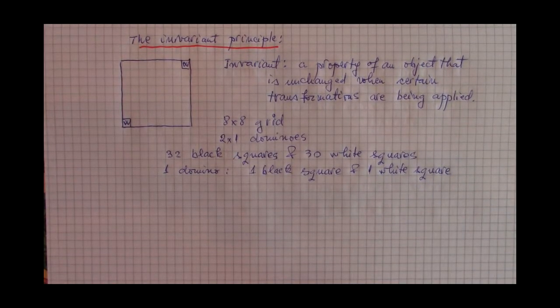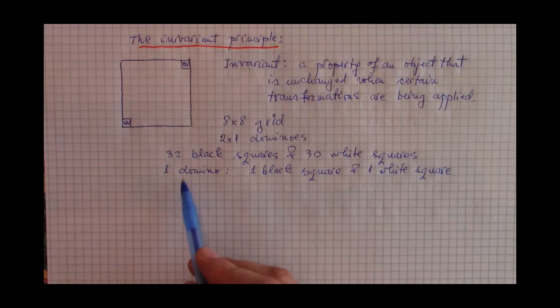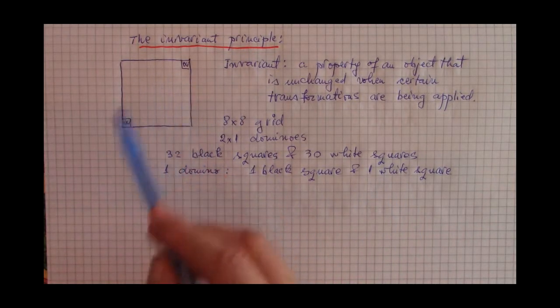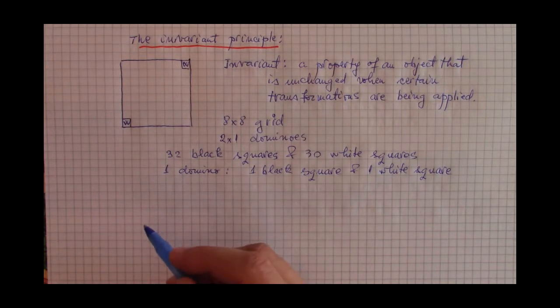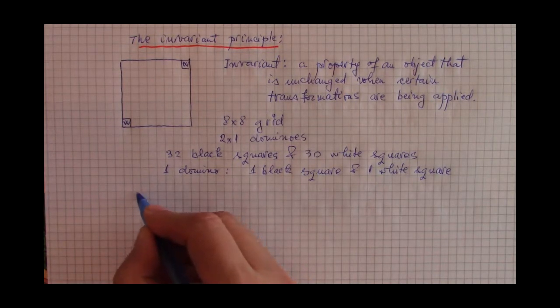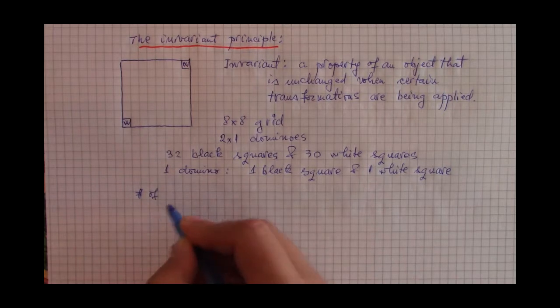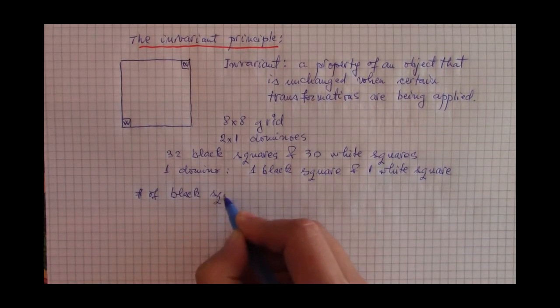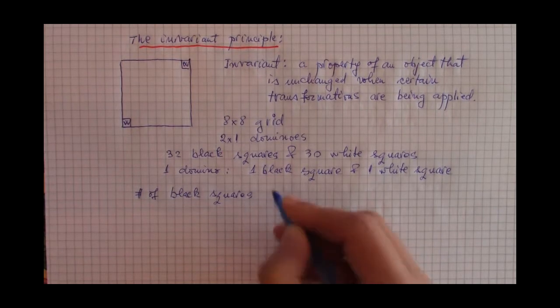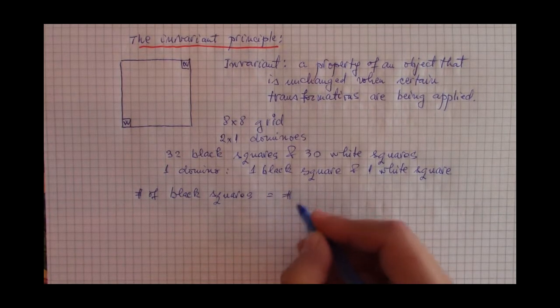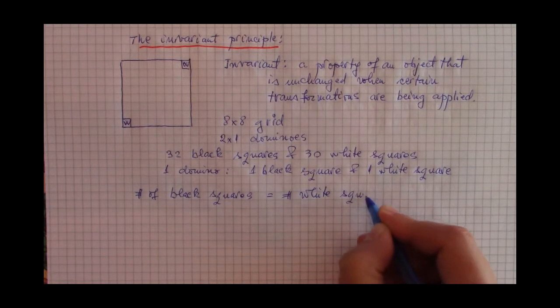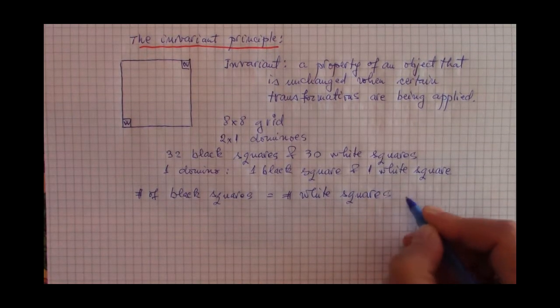Now what does that mean? This very simple observation means that if we place dominoes on here and those dominoes do not overlap, the number of black squares covered is going to be equal to the number of white squares covered.